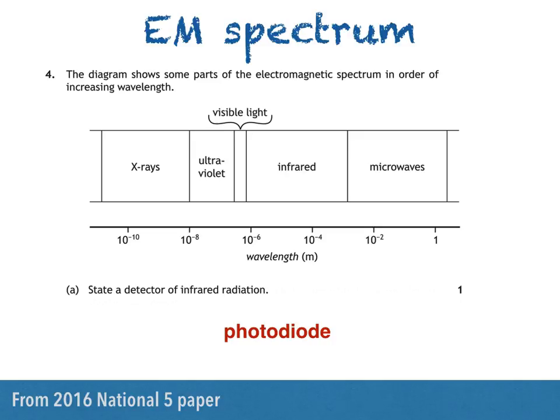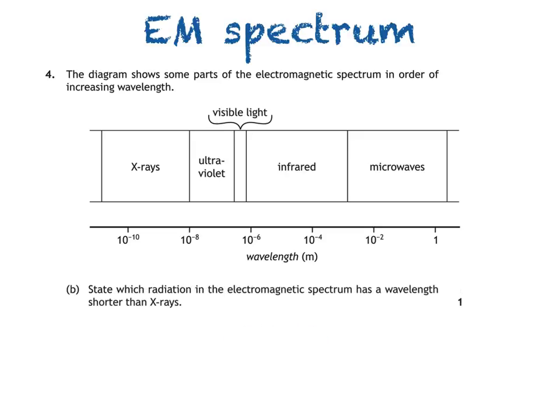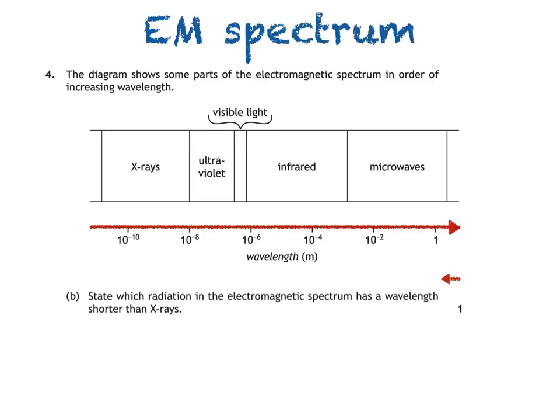Part B asks us to state which radiation in the electromagnetic spectrum has a wavelength shorter than x-rays. Remember that we're told the electromagnetic spectrum is shown in order of increasing wavelength, from left to right. You should also know that as we go from right to left, as the wavelength decreases, the frequency increases.